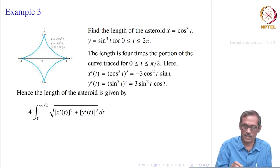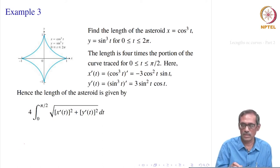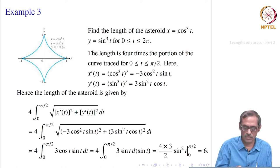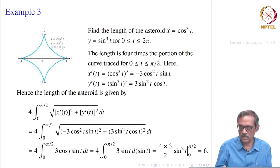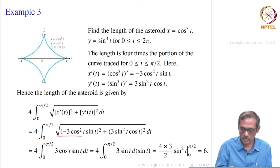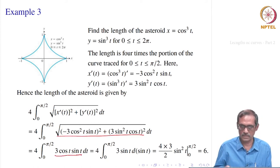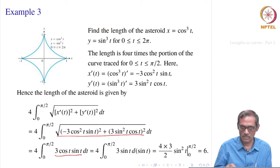Plugging into the formula, the length of the asteroid is 4 times the integral from 0 to pi by 2 of the square root of x prime t squared plus y prime t squared dt. That gives 4 times the integral of the square root of (minus 3 cos squared t sine t) squared plus (3 sine squared t cos t) squared dt. Simplifying using cos squared t plus sin squared t equal to 1, that reduces to 3 cos t sin t.